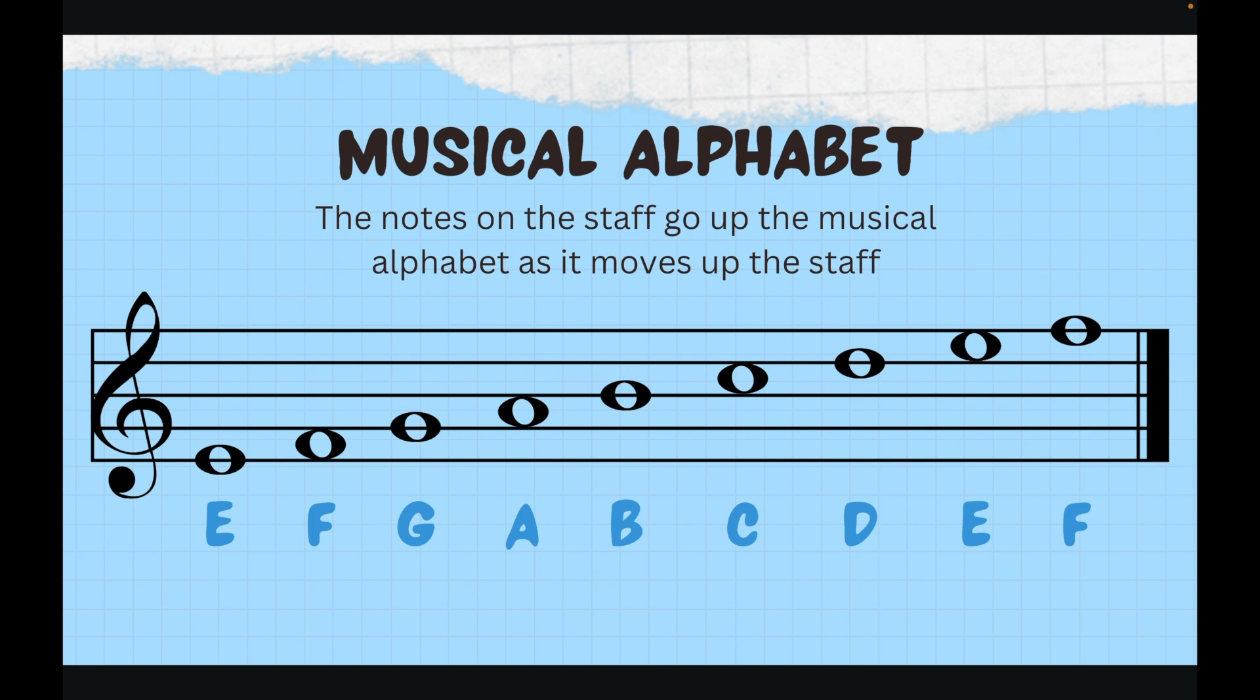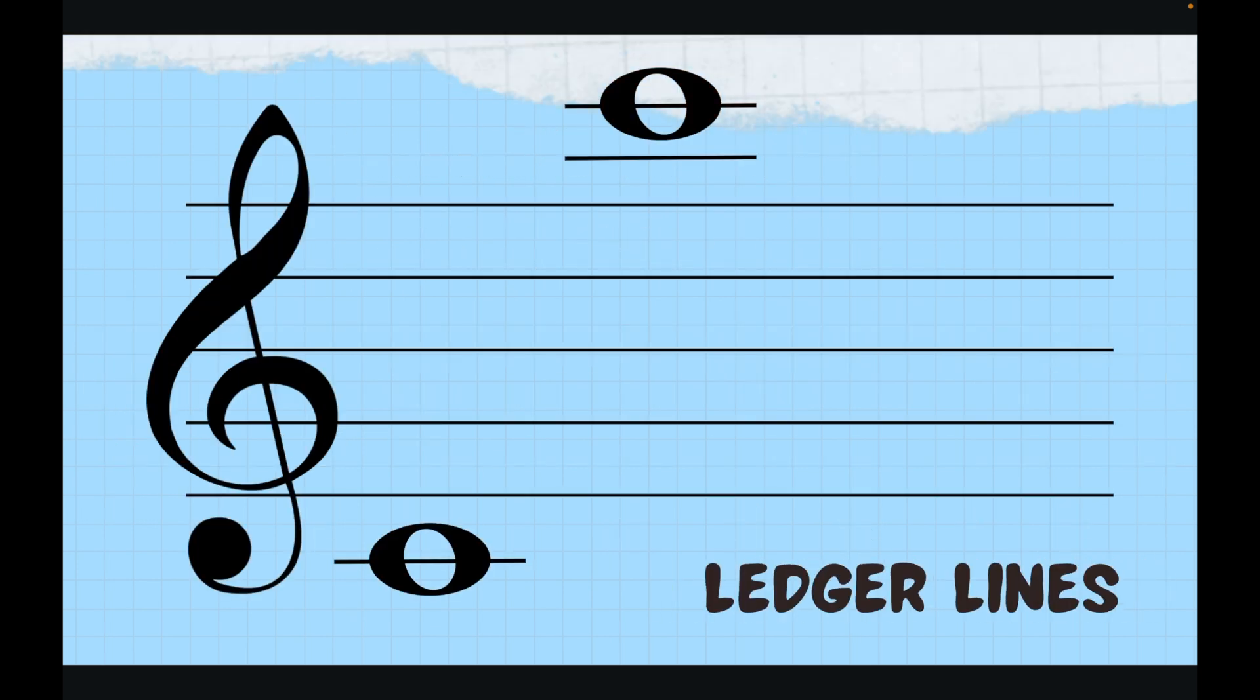Let's say we want even more notes because we can't just have that many notes. There has to be more, especially if we're going to play our instruments. We will use something that we call ledger lines. Ledger lines are used to extend the staff in either direction. There is no fun saying for all of our ledger lines, but we can use our newfound musical alphabet knowledge to help us.